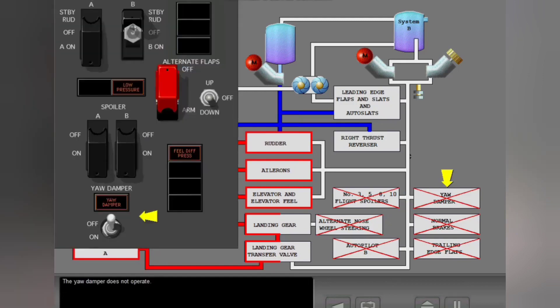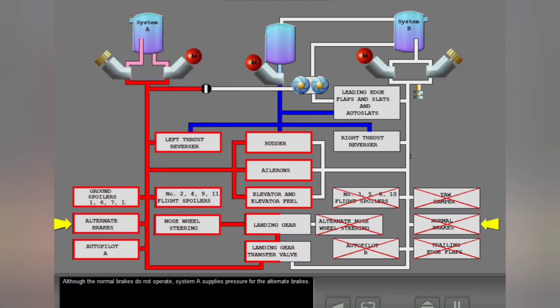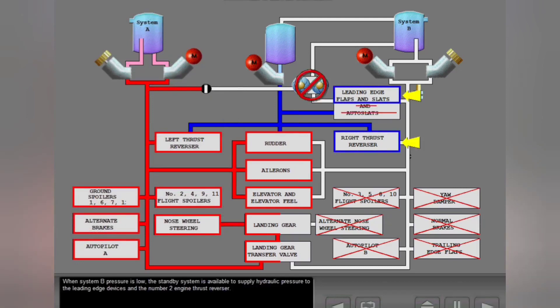The yaw damper does not operate. Although the normal brakes do not operate, System A supplies pressure for the alternate brakes. When System B pressure is low, the standby system is available to supply hydraulic pressure to the leading edge devices and the number two engine thrust reverser.